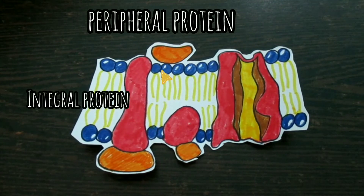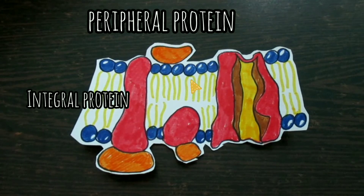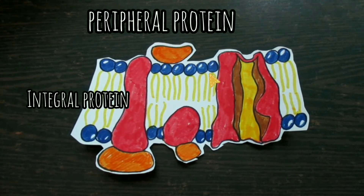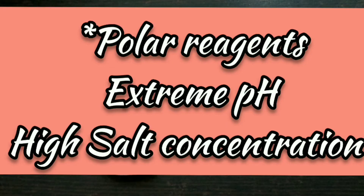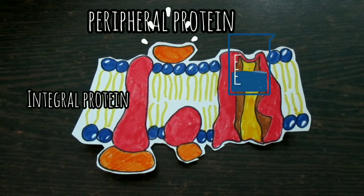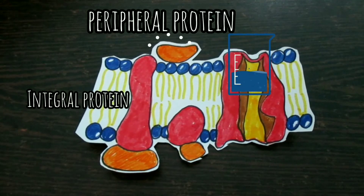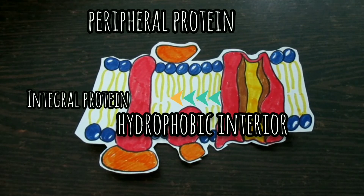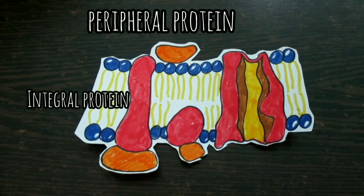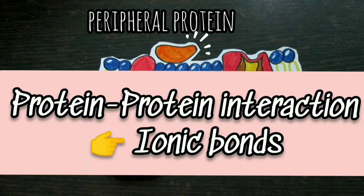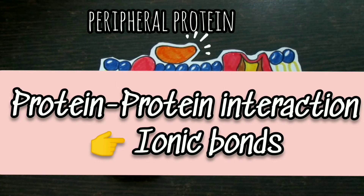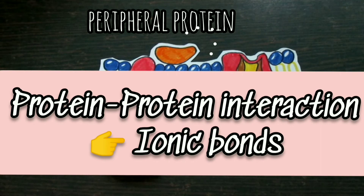Peripheral proteins were operationally defined as proteins that dissociate from the membrane following treatments with polar reagents such as solutions of extreme pH or high salt concentration — treatments that do not disrupt the phospholipid bilayer. Once dissociated from the membrane, peripheral membrane proteins are soluble in aqueous buffers. These proteins are not inserted into the hydrophobic interior of the lipid bilayer. Instead, they are indirectly associated with membranes through protein-protein interactions, which frequently involve ionic bonds that are disrupted by extreme pH or high salt.